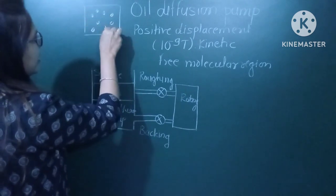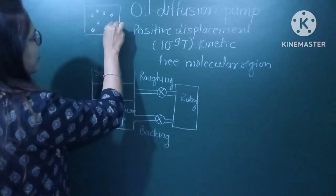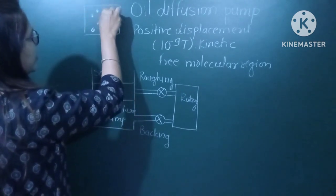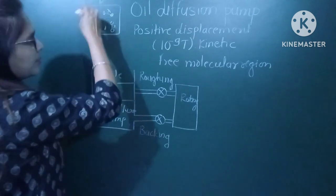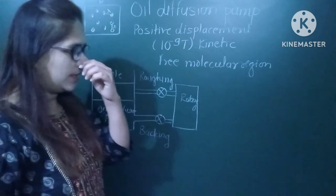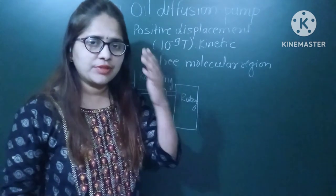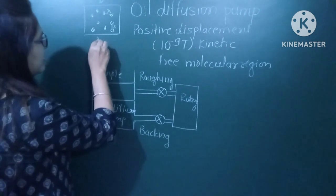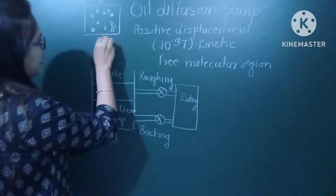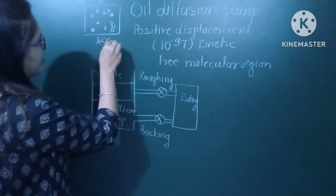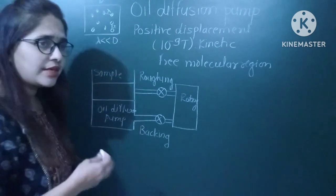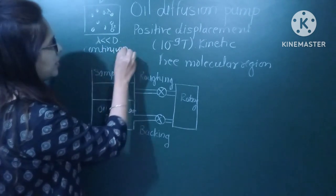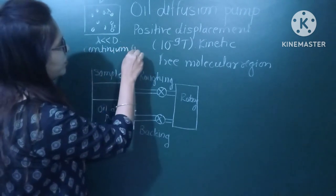Lambda is the mean free path between two collisions, and D is the diameter of the chamber. When lambda is very very small compared to D, it is called a continuum flow.